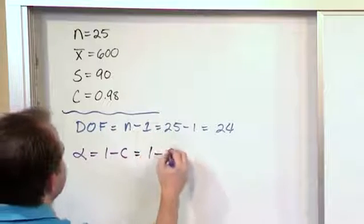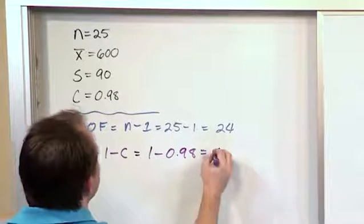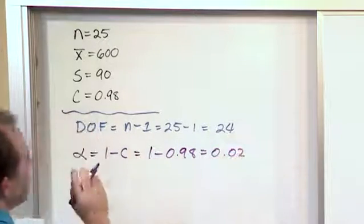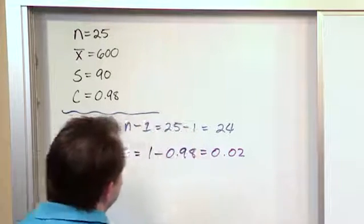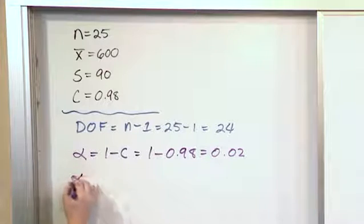So in this case, 1 minus 0.98 is 0.02. But our t-distribution table only cares about the area to the right of the value of t. So we calculate alpha over 2,